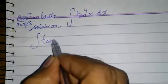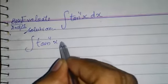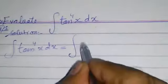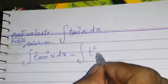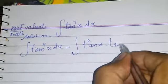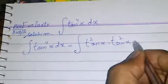Solution: Integral tan to the power 4x dx is equal to integral tan to the power 2x times tan to the power 2x dx.